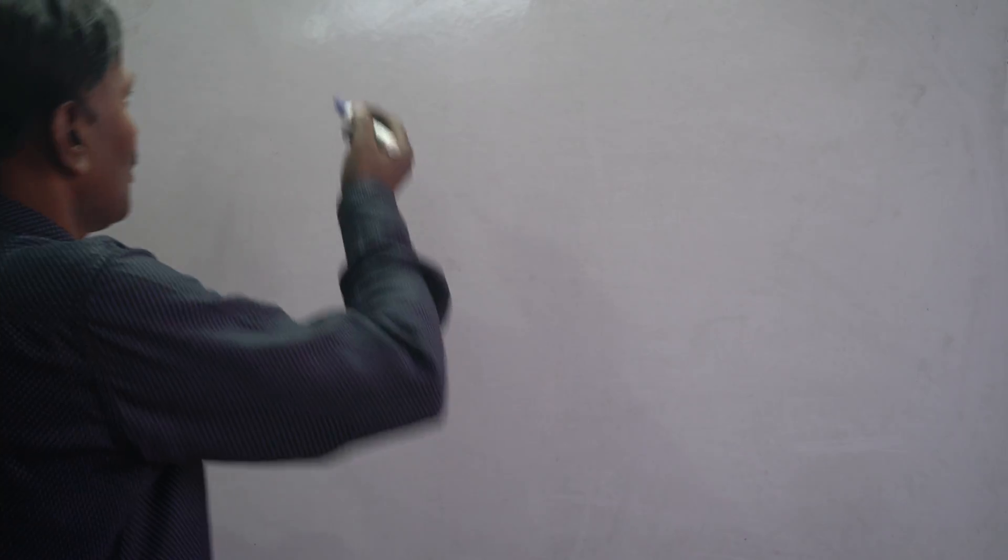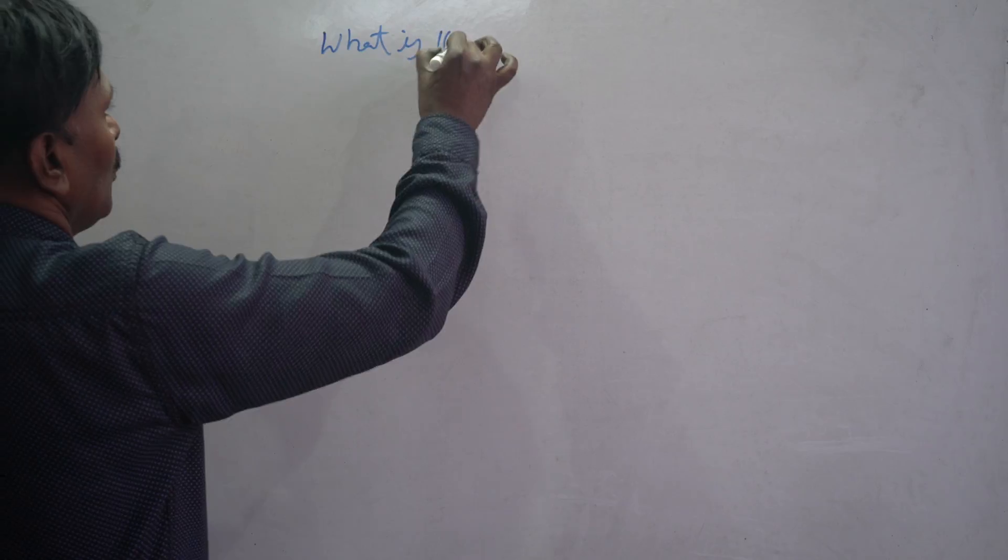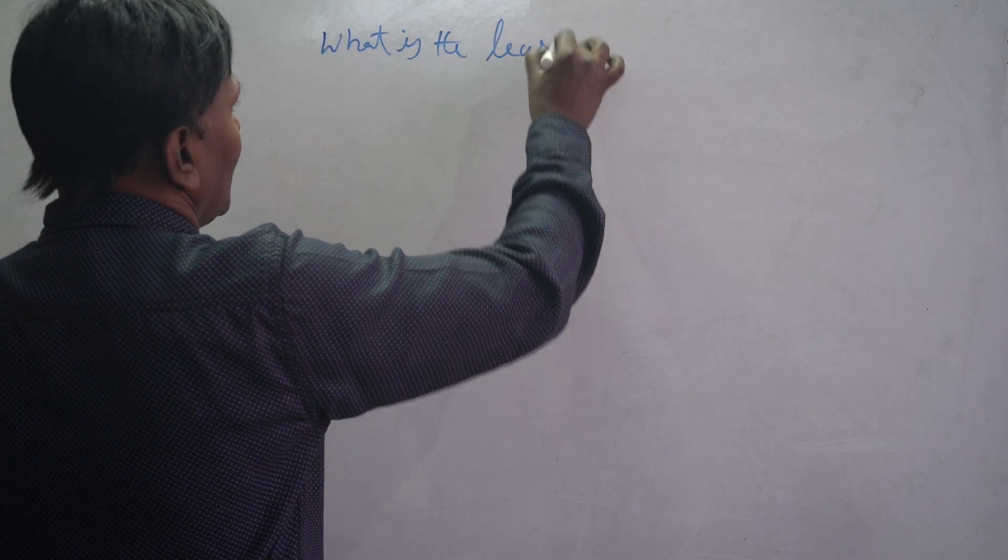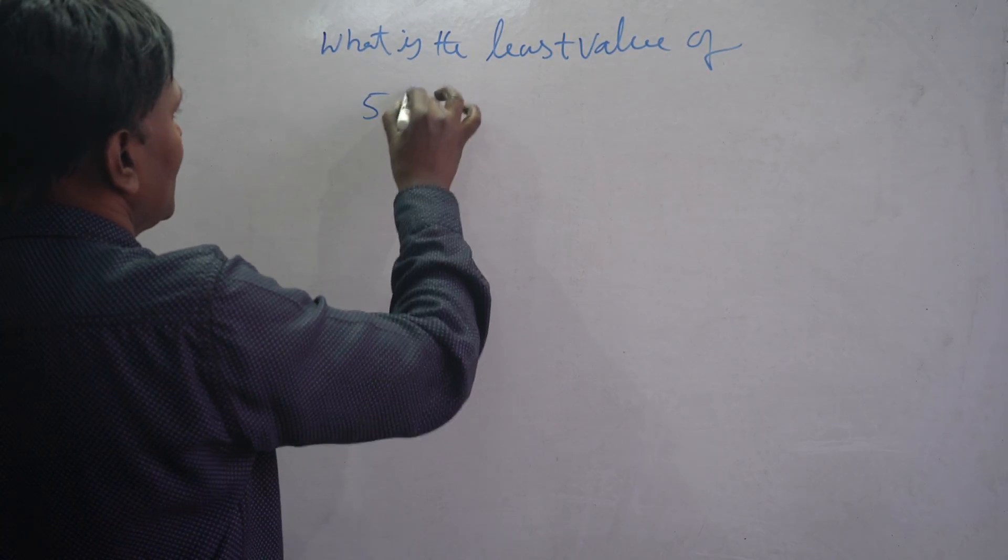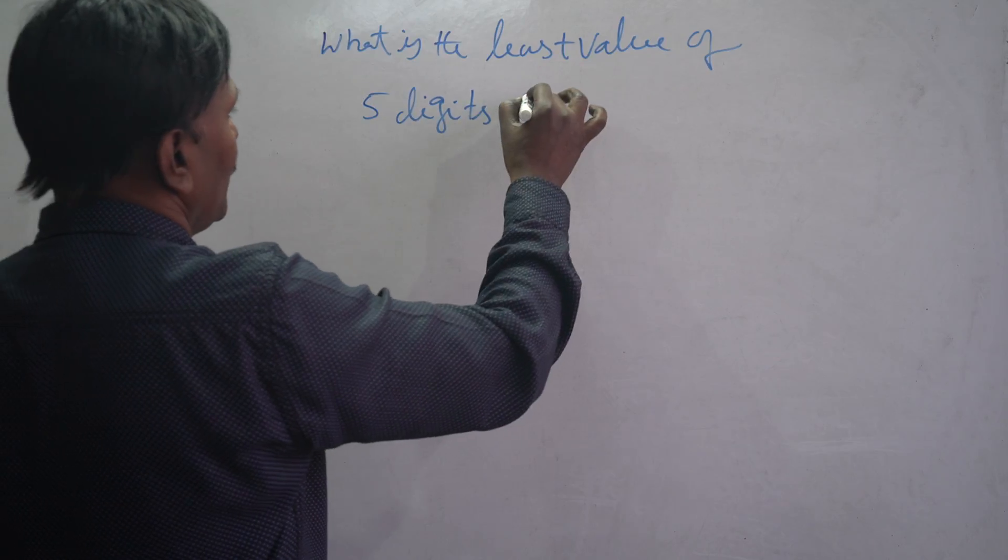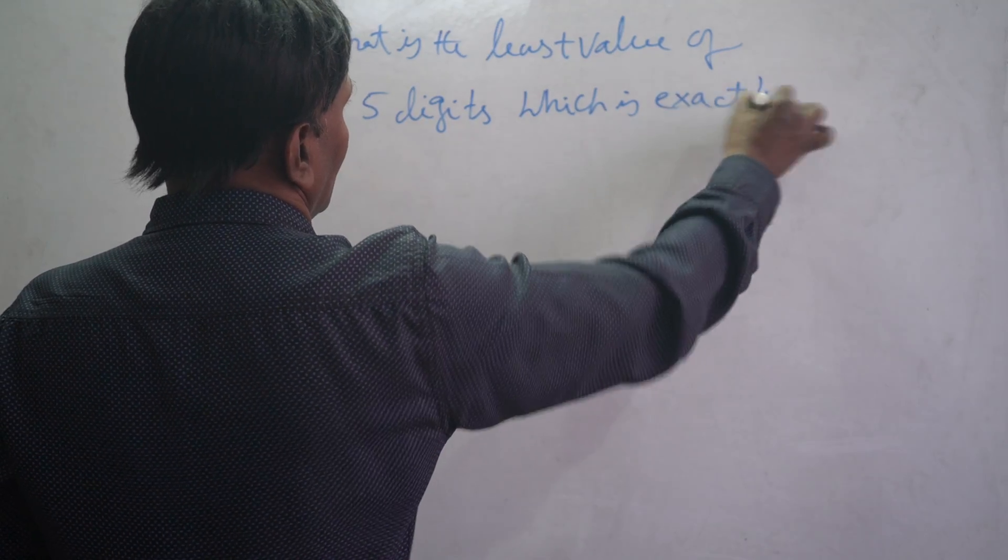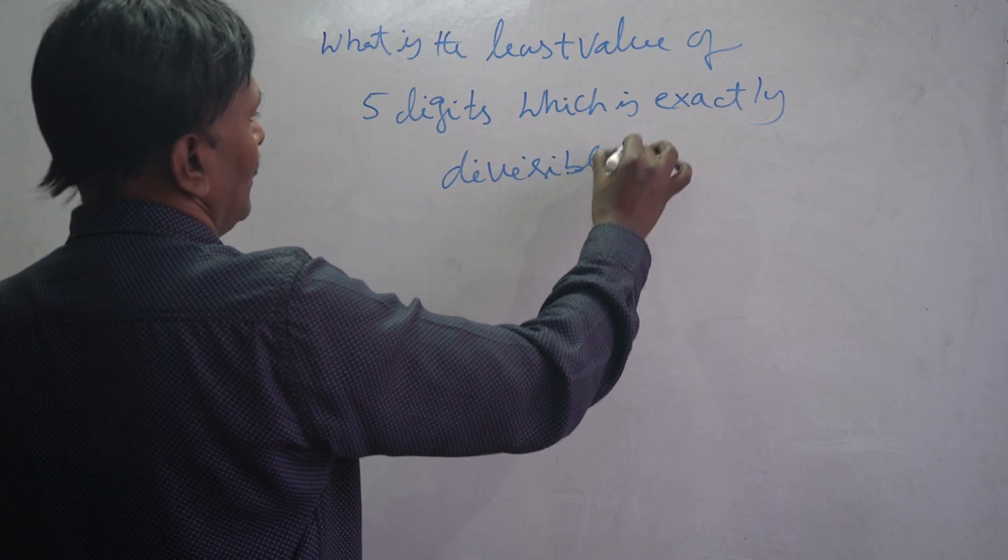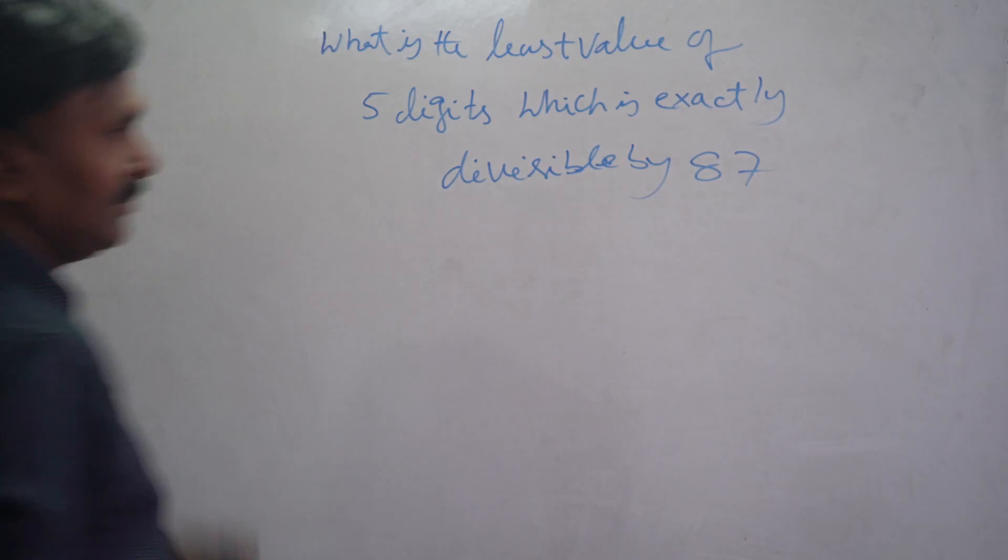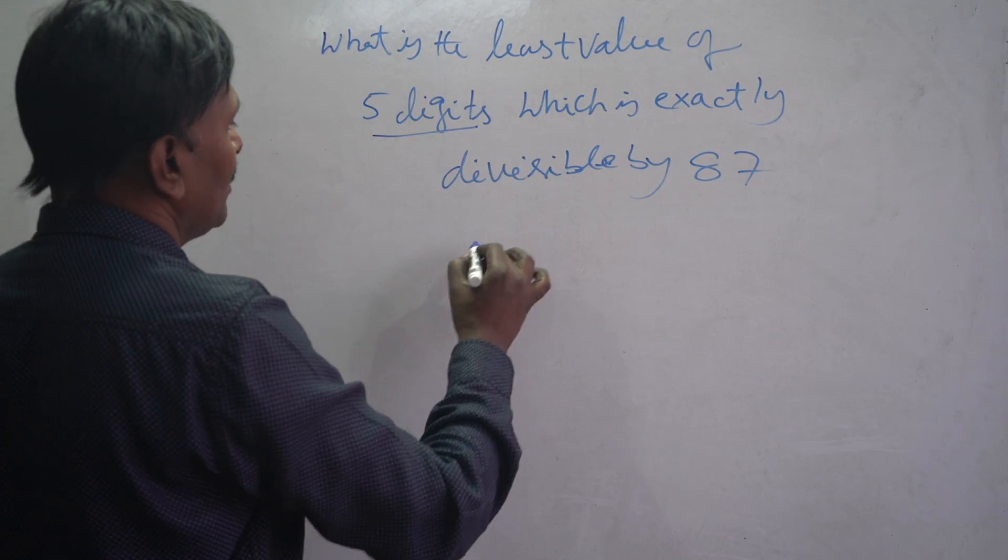Hi, this is Srinivas. Today we will see one problem: what is the least value of 5 digits which is exactly divisible by 87? First of all, what is the least value of 5 digits? The least value of 5 digits is 10,000.